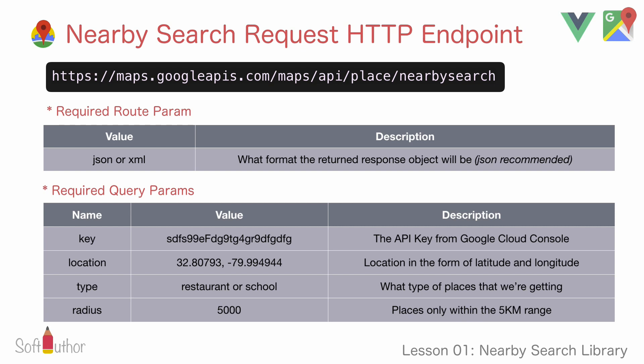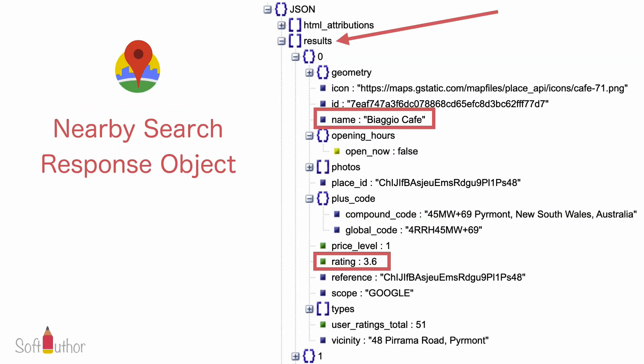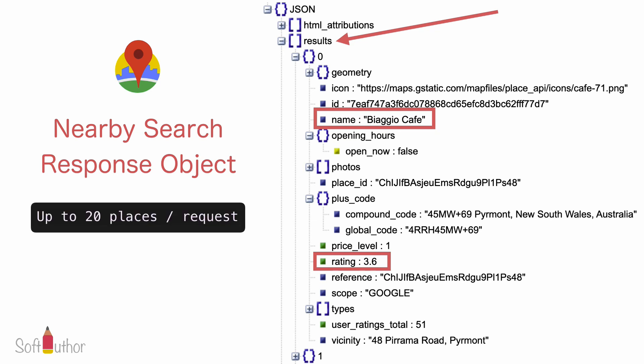Once the request is complete and everything goes well, you will get an output in JSON format like the screenshot on the right. The results array will have a list of places and you can see some information on each place, like name, rating, and so on. The output results array will have only up to 20 places, and if you want to get the next 20 places you will need to make a separate request.